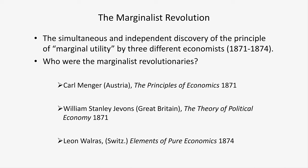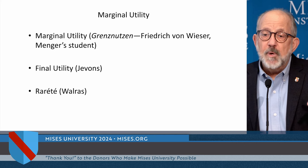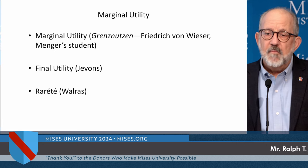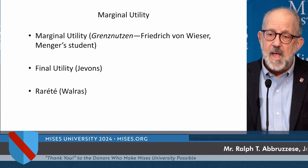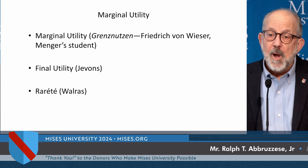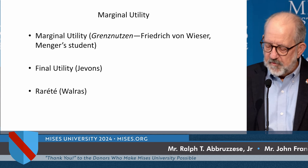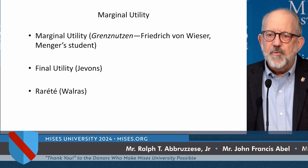Different names were given for that principle. For example, it was called Marginal Utility by Menger's student. Menger never really gave the principle a name. And finally, it was called Utility by Jevons, who was a British economist.